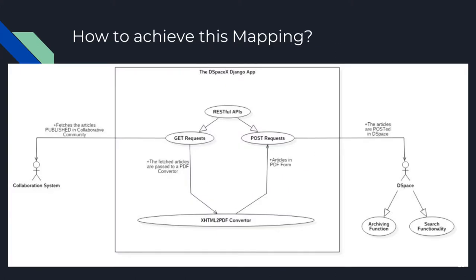How did we achieve this mapping? We decided to create our own separate Django app to facilitate this mapping. As you can see, on the left we have the collaborative community, in the middle we have the DSpaceX Django app, and on the right we have DSpace. Our DSpaceX Django app uses RESTful APIs to get information from collaborative communities. Information is received in JSON format and can relate to the creation of communities, sub-groups, or articles.